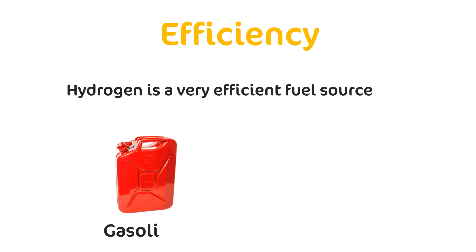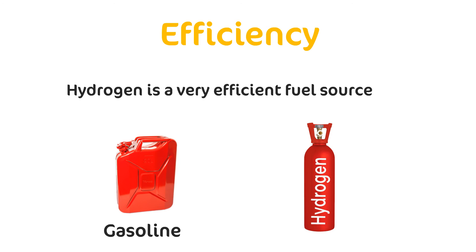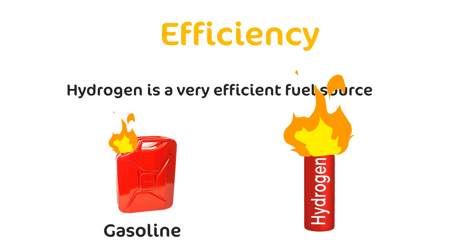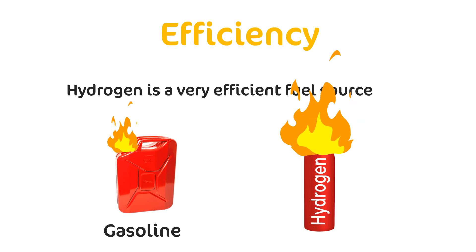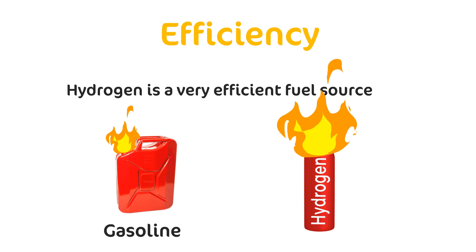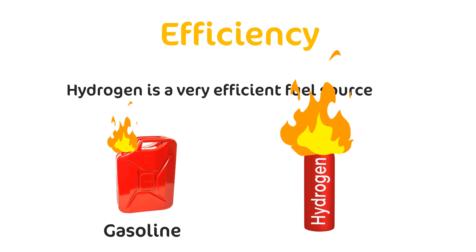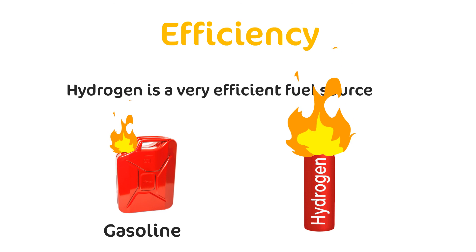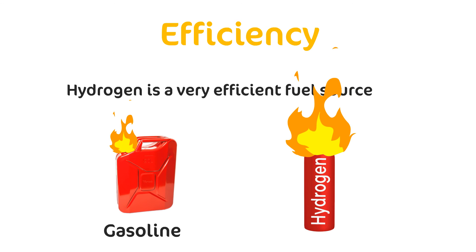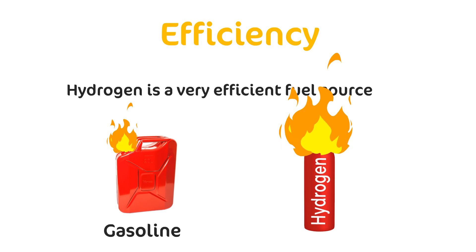Efficiency: Hydrogen is a very efficient fuel source, capable of producing more energy per pound of fuel than gasoline. This means that an equal-sized tank of hydrogen fuel would give a vehicle a greater range or more power than when filled with gasoline and an internal combustion engine. This advantage is especially relevant compared to batteries on electric vehicles that may limit a car's range to less than 100 miles, making it impractical for some drivers.